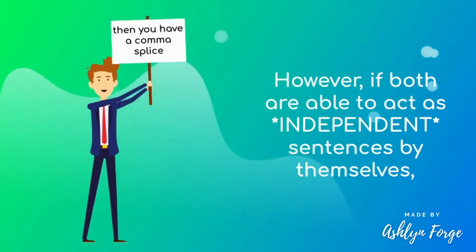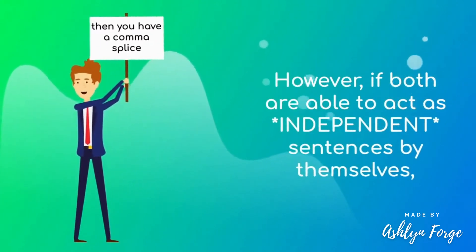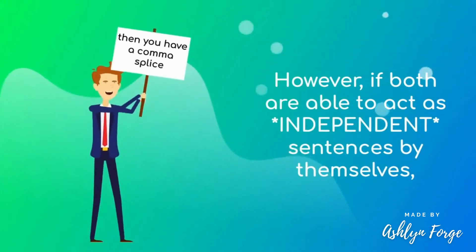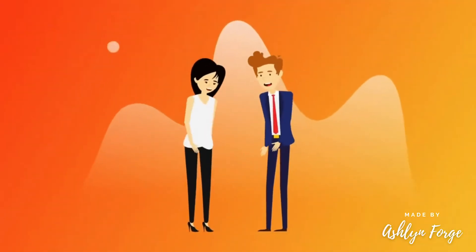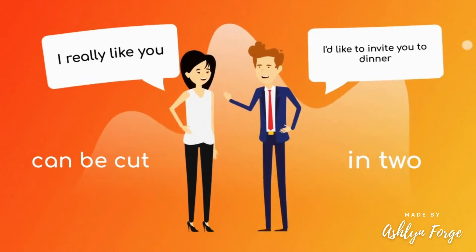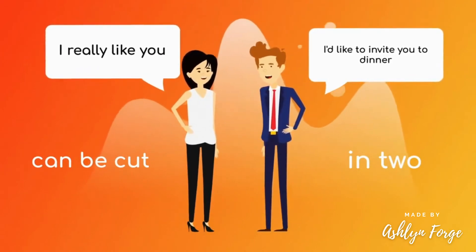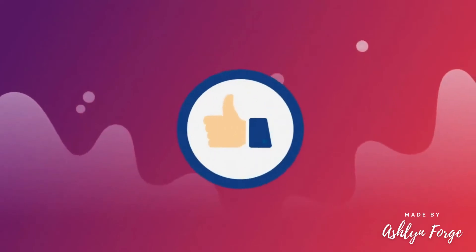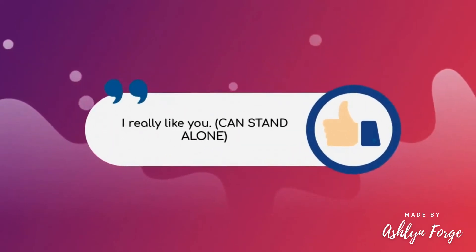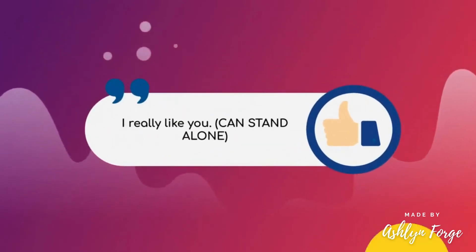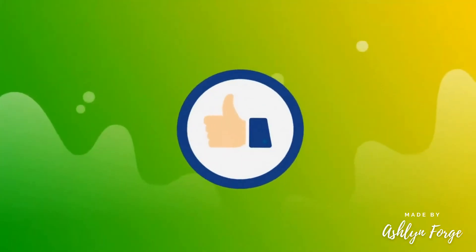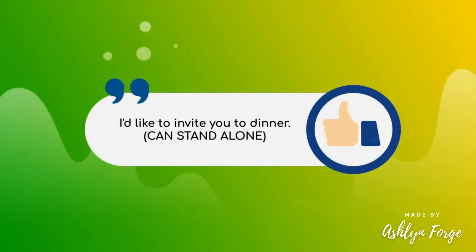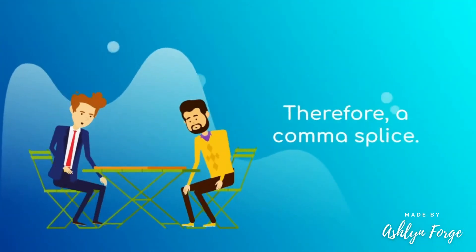However, if both clauses are able to act as independent sentences by themselves, then you have a comma splice. 'I really like you, I'd like to invite you to dinner' can be cut in two — 'I really like you' can stand alone, and 'I'd like to invite you to dinner' can stand alone. Therefore, a comma splice.